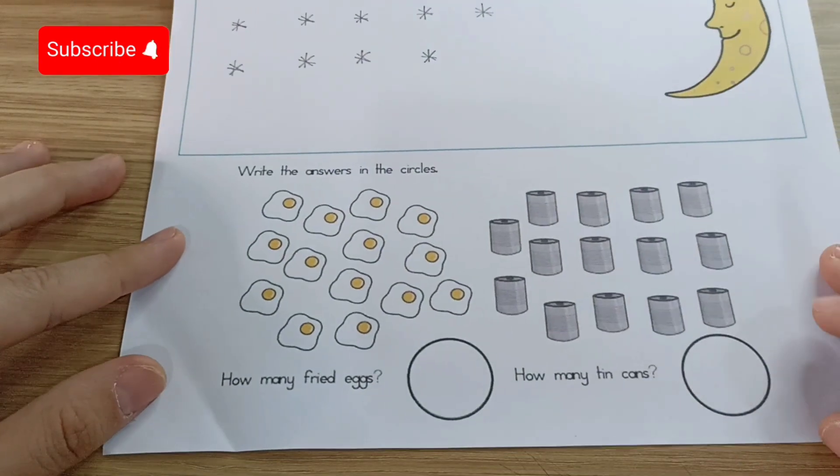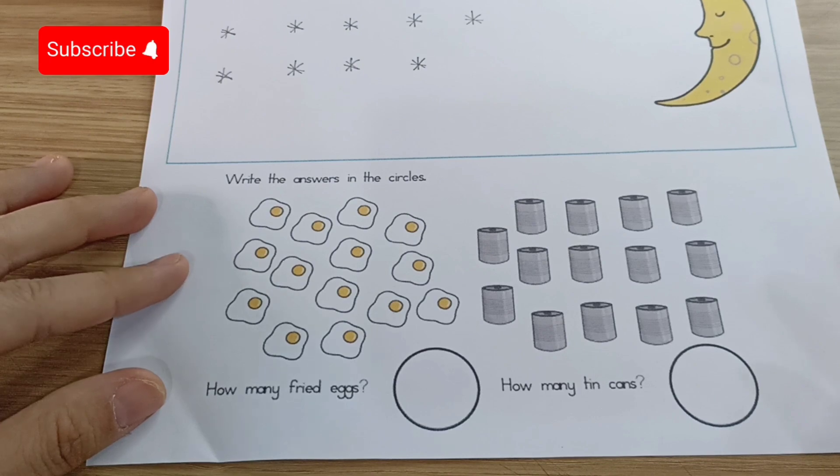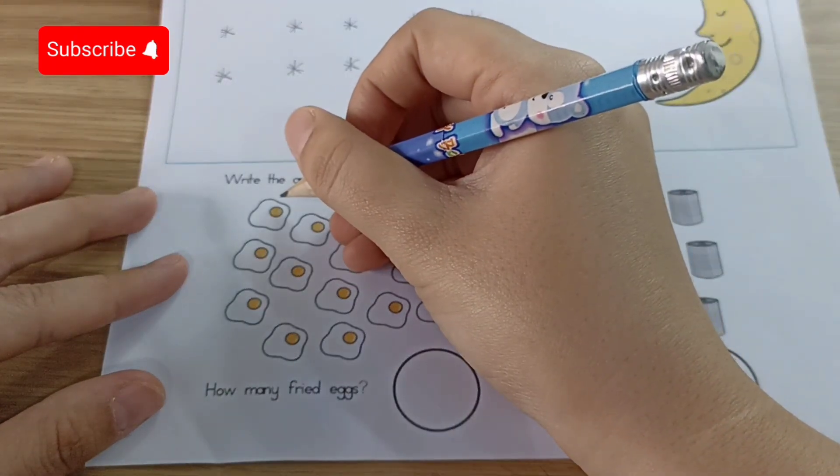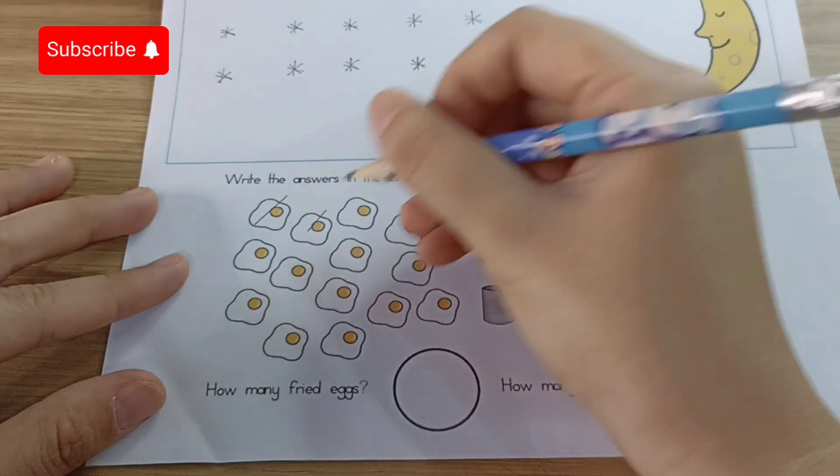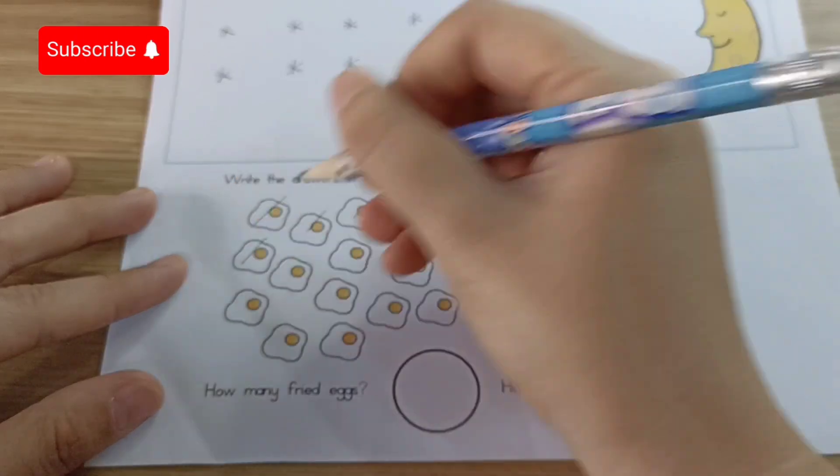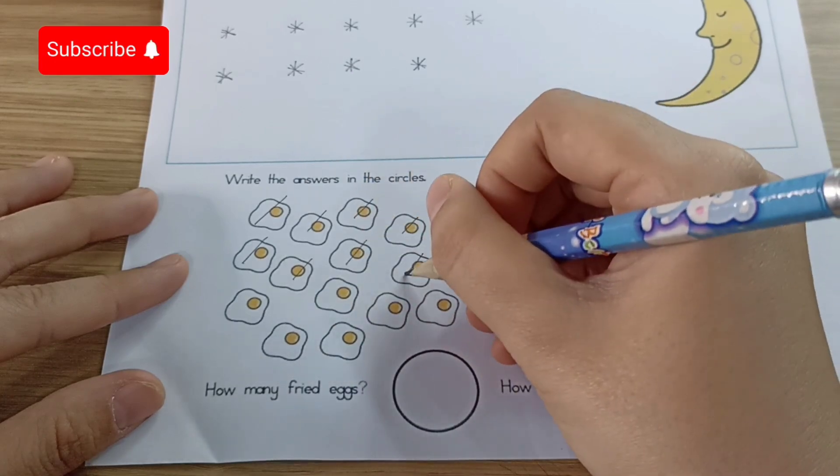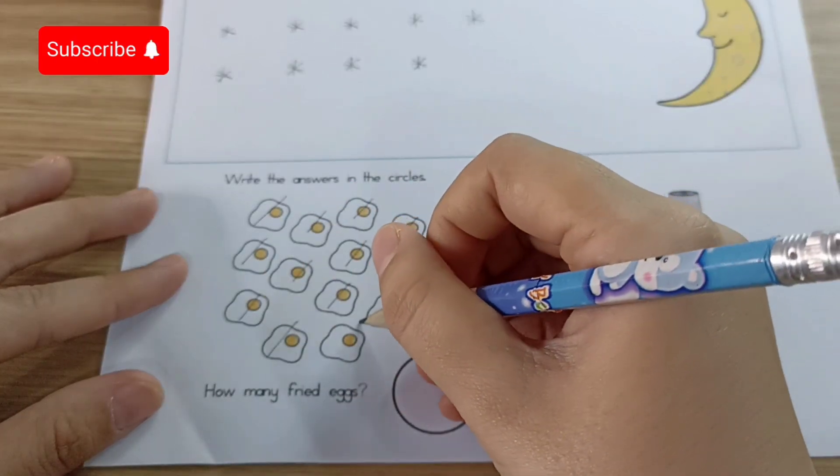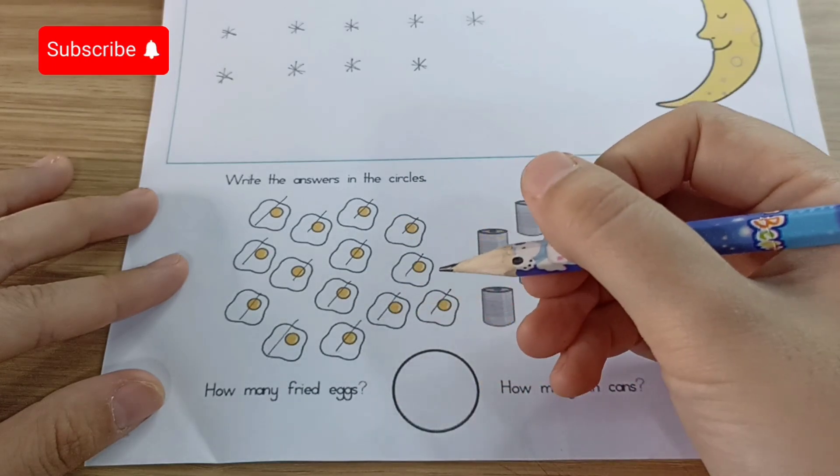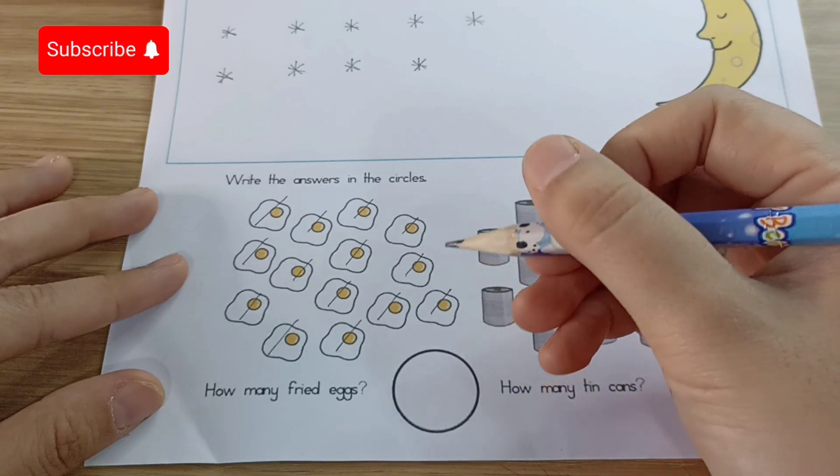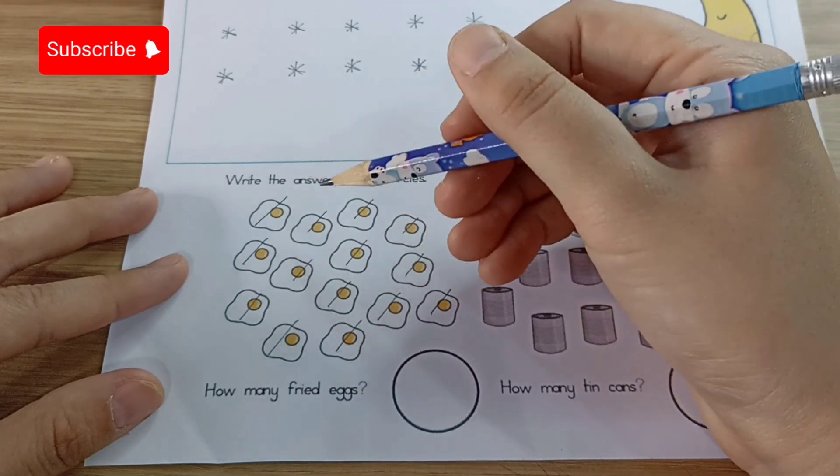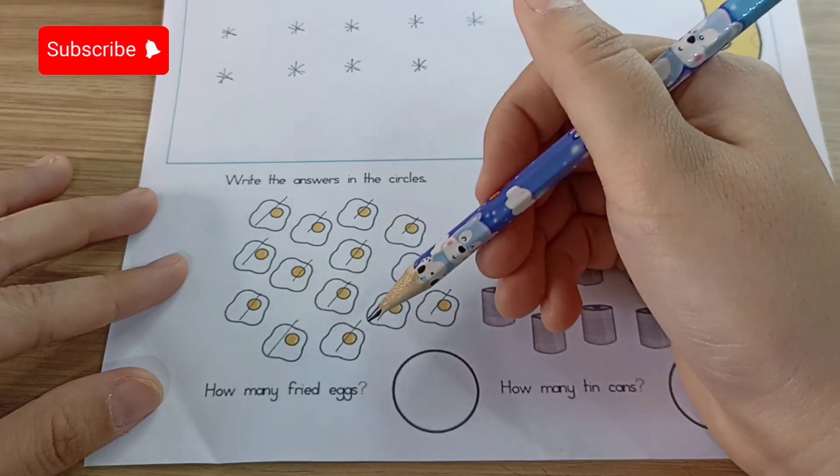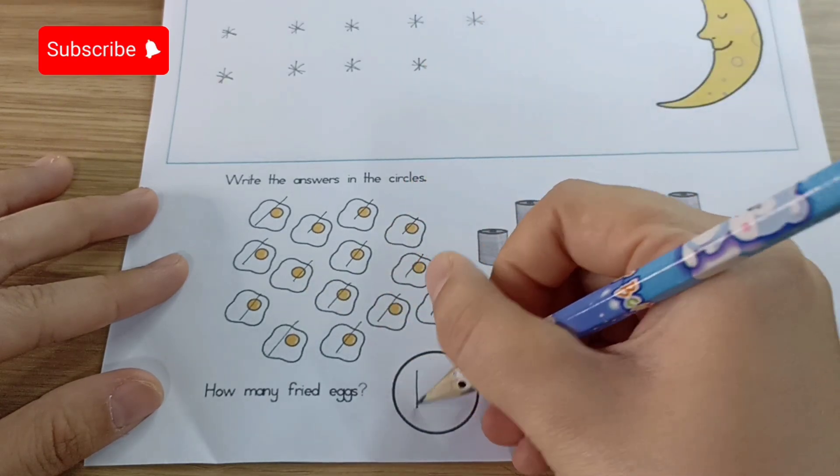Now let's write the answers in the circles. How many fried eggs? Look at Miss Andy first children. Seven. And count. One, two, three, four, five, six, seven, eight, nine, ten, eleven, twelve, thirteen, fourteen. Fourteen. Fourteen eggs. Now it's your turn children. Count from left to the right. Don't forget to cross. Now you can write down number fourteen. One and four. Fourteen.